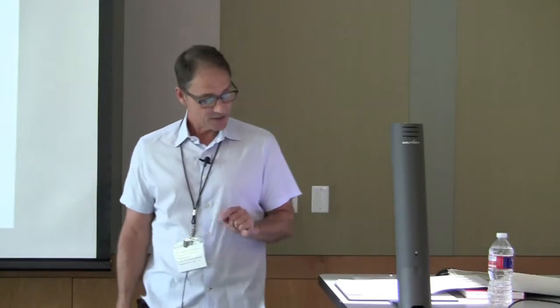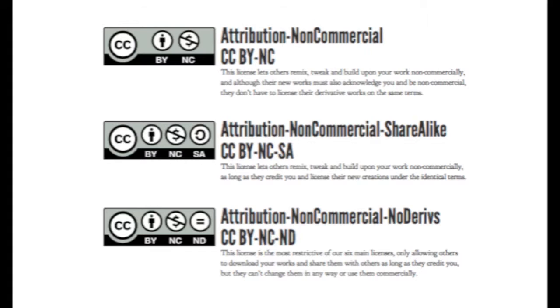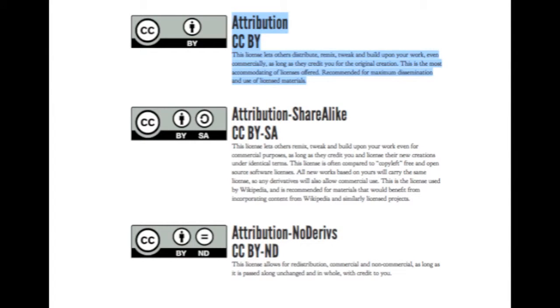There's another parameter: commercial. You can say whether you'll allow others to make a profit from your materials or not. You can specify non-commercial — use only for non-profit purposes, and education is typically a non-profit endeavor. You can mix and match these parameters: attribution, non-commercial, share-alike; or attribution, non-commercial, no-derivatives. The most open license has only attribution; the most closed open license has all restrictions combined.